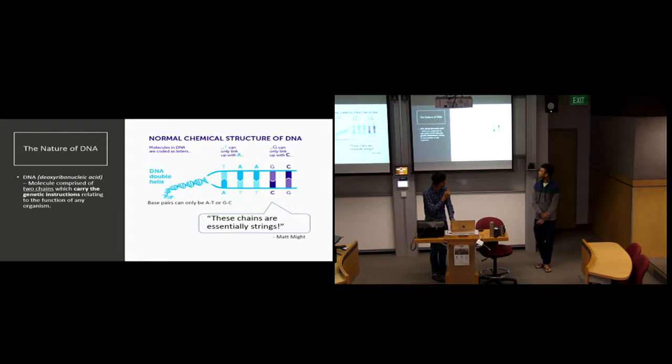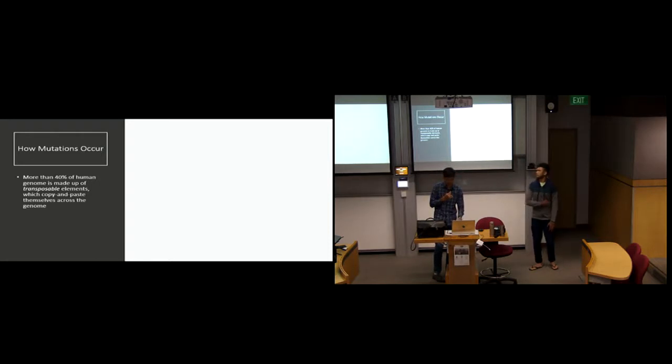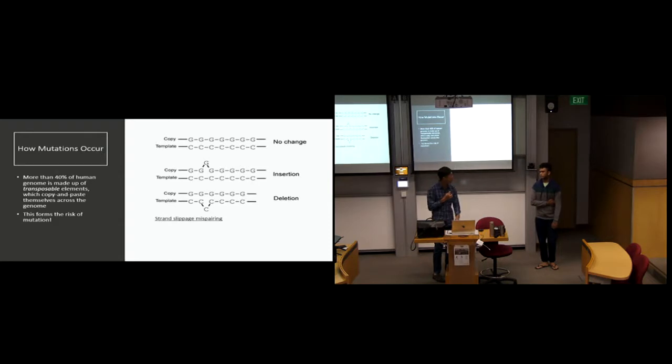In the case of Matt Might, he realized that these were essentially strings. So how do mutations occur? 40% of the human genome is transposable, and whenever there's a replication, there's a chance of an error. One particular case would be in strand slippage mispairing. In this case, there's either insertion or deletion of any of the possible base pairs.